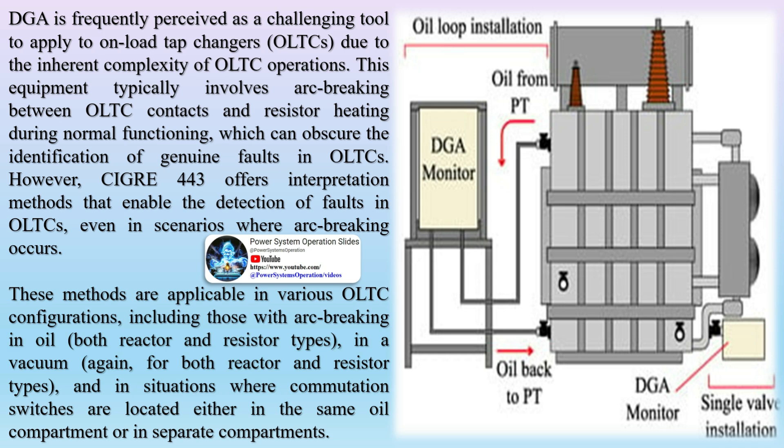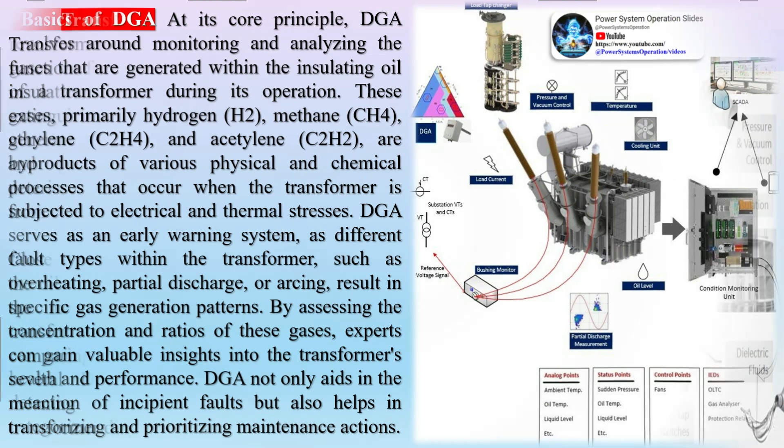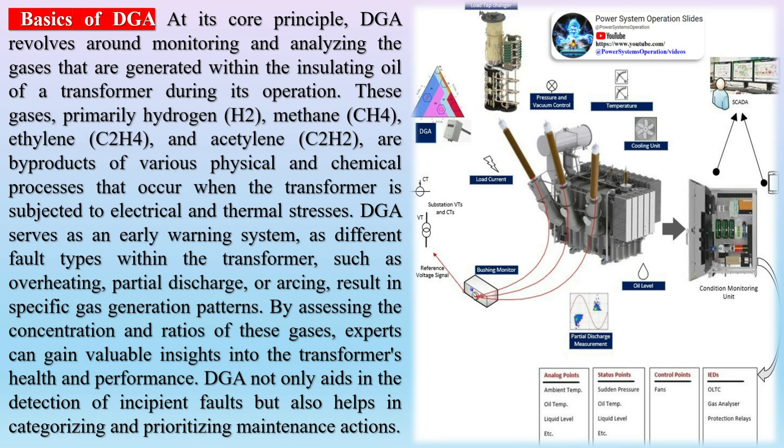DGA testing is performed on an annual basis to determine the levels of gas dissolved in the oil. However, one in three transformer failures occur within 12 months of testing, sometimes due to gases going undetected between testing cycles. Online DGA monitoring provides a continuous look at the gases in the main tank. Key gas monitoring is a cost-effective solution that allows monitoring to be implemented more widely across the entire fleet.